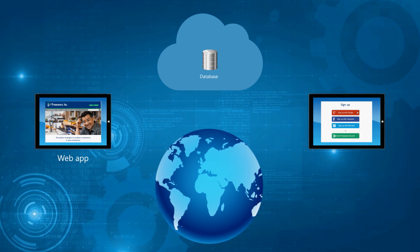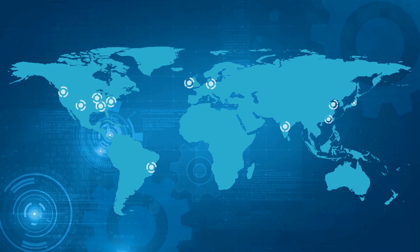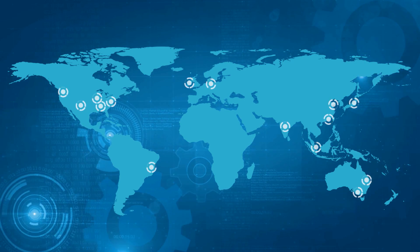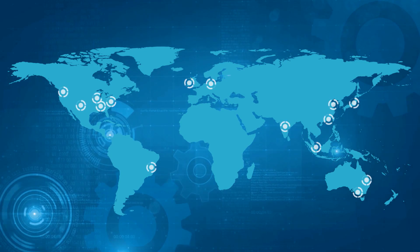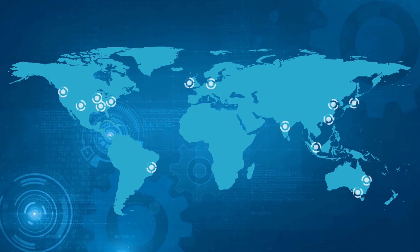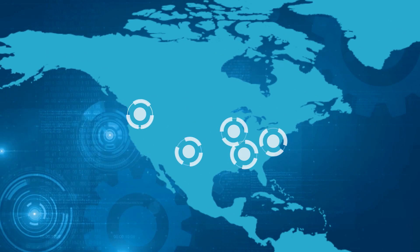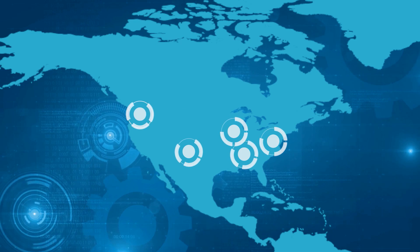We also take all of the data and spread it around our data centers all around the world. So no matter where a customer is logging in from, they get a high-speed experience because it's local and close. It's also distributed — we've got copies of your data all around the world. So even if a data center burns down, we can reroute traffic to another data center and make sure that your login service is always up and running. That's very powerful, and would be very expensive for you to do yourself.